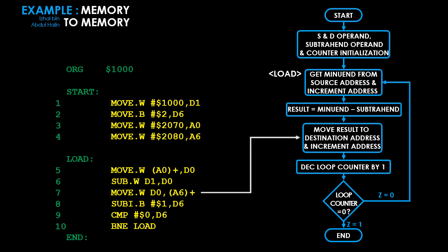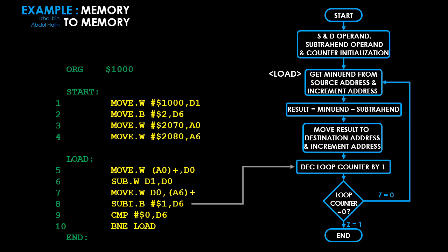The next instruction transfers the result in D0 into memory at the address pointed to by A6, with post-increment on A6 so it always points to the next storage address. The following instruction decrements the loop counter in D6 by one. D6 was initialized to two at line two. The next two instructions handle the decision-making: a compare instruction followed by a Branch Not Equal instruction, where the compare checks the counter's value against zero.